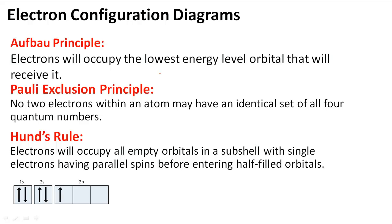Electron configuration diagrams help us understand how electrons of an atom behave, where they are located, and why they behave in certain ways, giving certain elements certain properties.